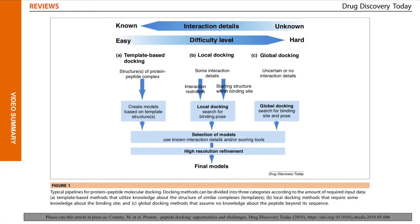The protein-peptide docking methods may be divided into three categories: template-based docking, local docking, and global docking. The template-based docking methods use known structures as templates to build a model of the complex. Local docking methods, on the other hand, perform a search for a peptide binding pose in the proximity of a user-defined binding site; therefore, the docking accuracy depends heavily on the input information on the binding site. Eventually, the global docking methods perform a coupled search for the peptide binding site and pose, and these procedures do not require any information on the binding site of the receptor.